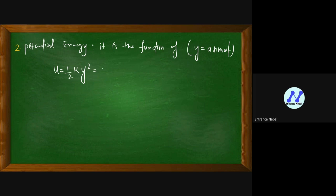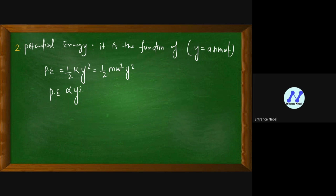Potential energy is nothing but one by two times the spring force constant into extension squared, that means displacement squared. So potential energy equals one by two k y squared, which equals one by two m omega squared y squared. This is the formula for potential energy.